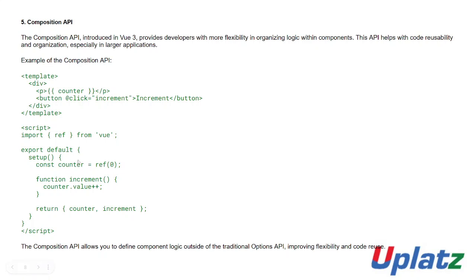In the setup function: const counter = ref(0). This counter is used as data. You can see counter displayed, and there's a click button labeled 'Increment'. At click — meaning on click — it calls the increment function. The increment function is inside the setup function: it takes counter.value and increments it (plus plus), increasing it by 1.